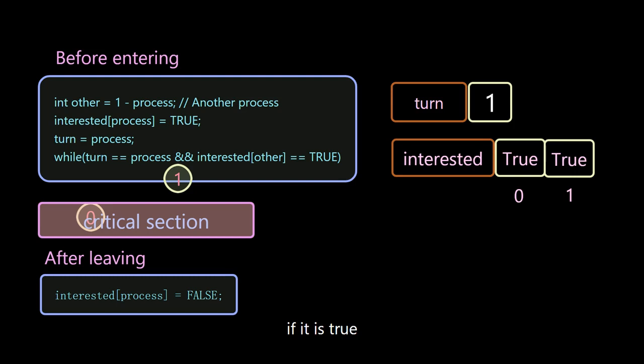Therefore, it waits in a loop. Until process 0 leaves the critical section, set the 0 bit of the interested to false.